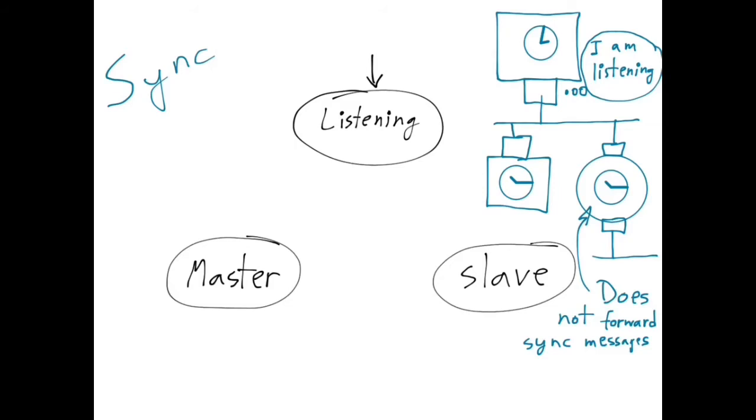In other words, it can only receive sync messages from this port or this one. As a result, by listening for sync messages, our port is basically checking if there is already a port in the master state in the network segment to which our port is attached.